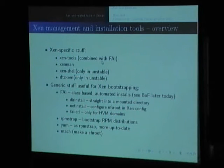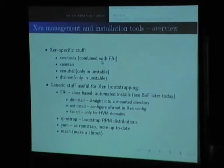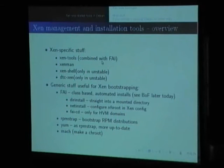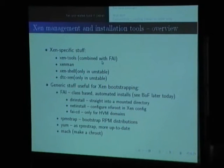Now let's look at management tools for Xen in Debian. There's Xen tools, which can be combined nicely with FAI (Fully Automatic Installation), a GUI called Xenman, a Xen shell for controlling it, and DTC Xen which generates graphical performance data and has a SOAP API. There's also FAI itself, which is class-based automated installation — you can use it to install Xen domains, install directly into a mounted directory, do net installs, or install hardware virtual machine-based domains with a CD.